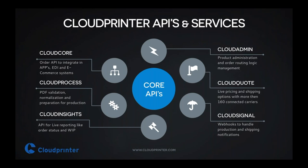Then we have Cloud Quote. It's a quite big area, but it's basically asking us for a quote on a simple data structure for an order, getting a quote back with the price on the product and a number of shipping options. This gives you, in a very short time, a good indication of what we can do, what price level it is, and which shipping options you can get for this specific product.